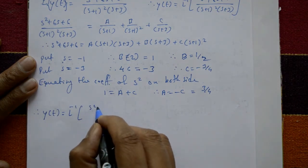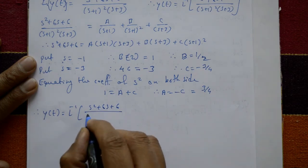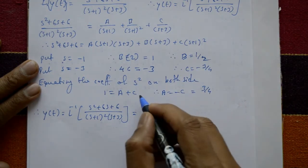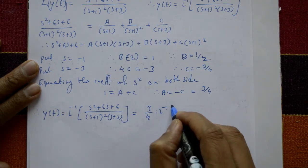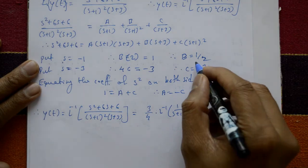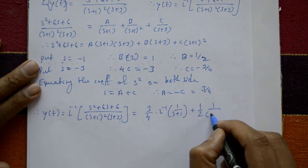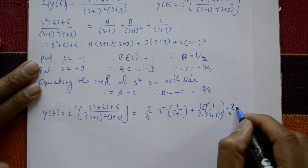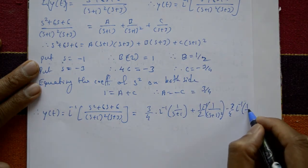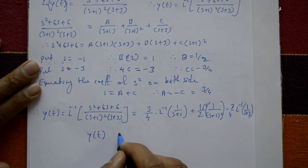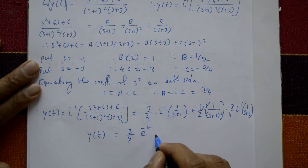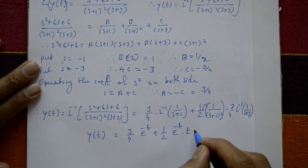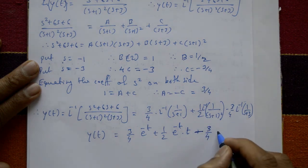Substituting A, B, and C values, y of t equals the inverse Laplace of the expression. This gives: A value 3 by 4 times inverse of 1 upon s plus 1, plus B value 1 by 2 times inverse of 1 upon s plus 1 whole squared, plus C value minus 3 by 4 times inverse of 1 upon s plus 3. Therefore y of t equals 3 by 4 times e raised to minus t, plus 1 by 2 times e raised to minus t times t, minus 3 by 4 times e raised to minus 3t.